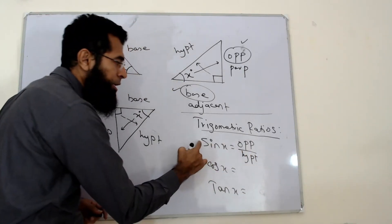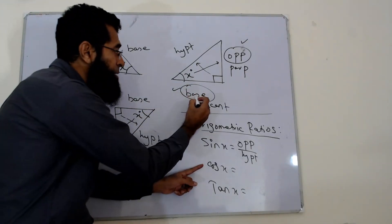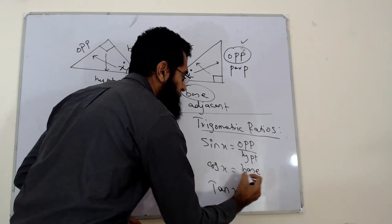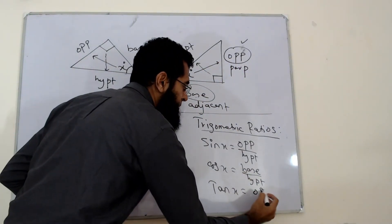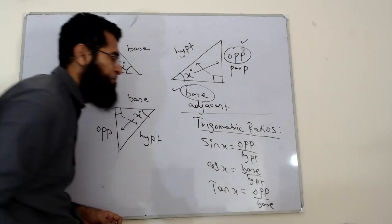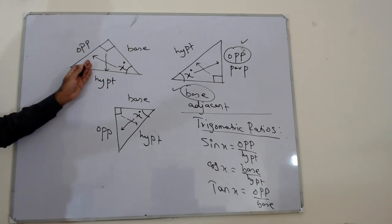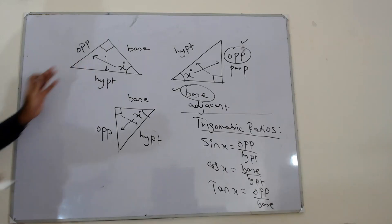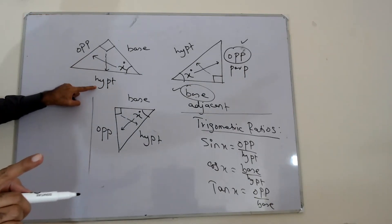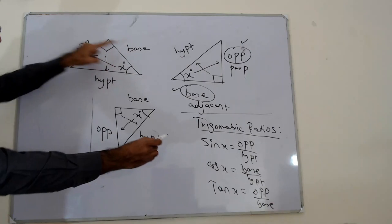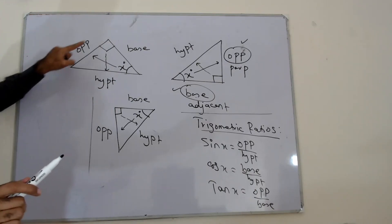So sin x equals opposite over hypotenuse. Cos x connects the base and hypotenuse — that is base over hypotenuse. And tan x connects opposite and base — that is opposite over base. So for any right angle triangle, the ratios remain the same: sin x = opposite over hypotenuse, cos x = base over hypotenuse, and tan x = opposite over base.